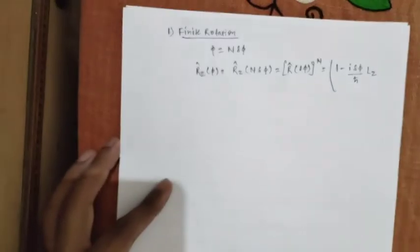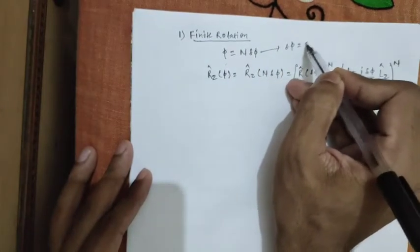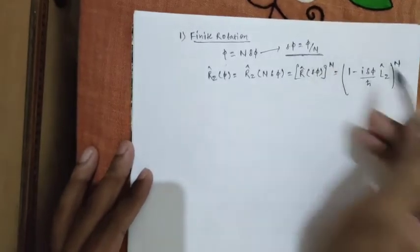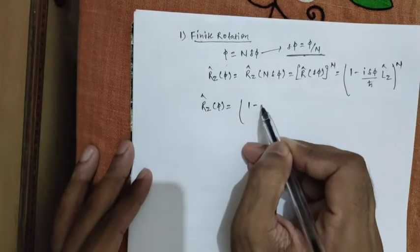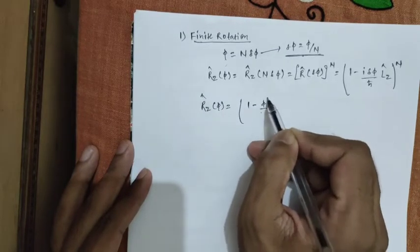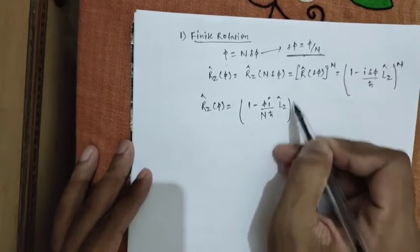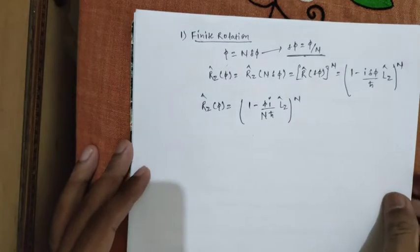And we can also calculate the angular momentum, orbital angular momentum component in z direction. Now, we know that from here del phi is equal to phi by n. Substitute this here, so Rz phi for the finite rotation is minus i phi by n h bar Lz, n times.